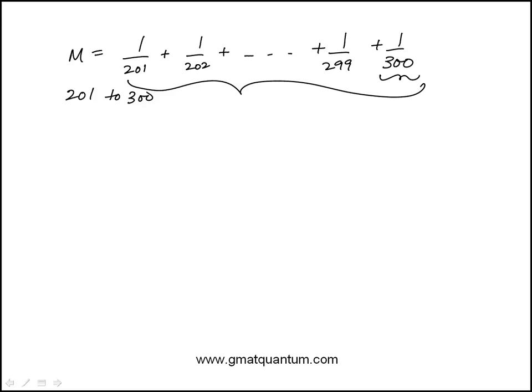The least term is 1 over 300. If I replace each term with 1 over 300, that would be the lower bound of that sum, meaning the sum M has to be greater than this. I have 100 terms here, 201 to 300.